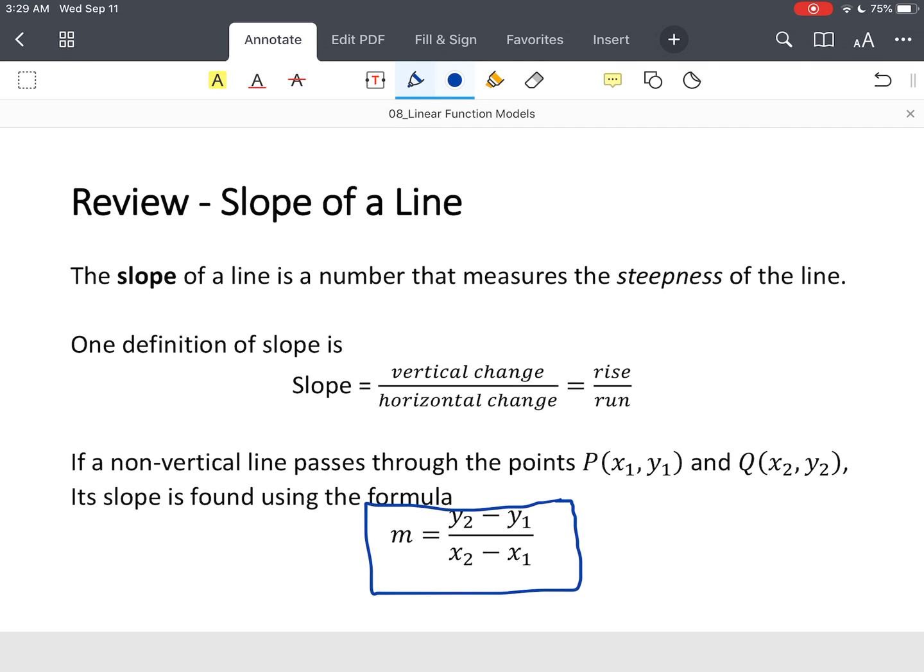Now, these values - so you've got X sub 1, Y sub 1. That's simply the X and Y coordinate of the first point. And then X sub 2, Y sub 2 are the coordinates of the second point.